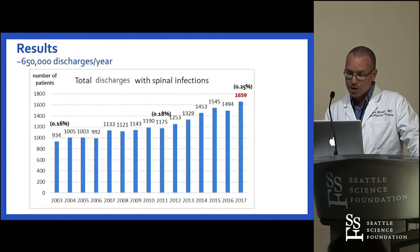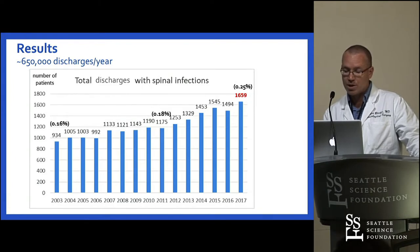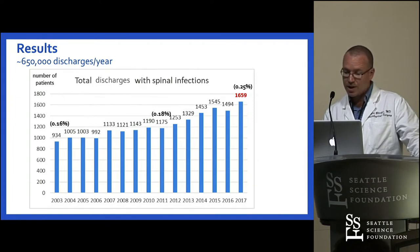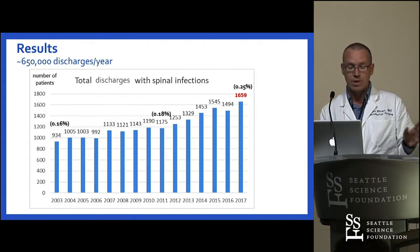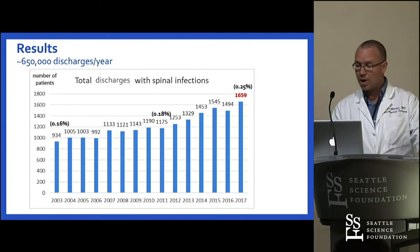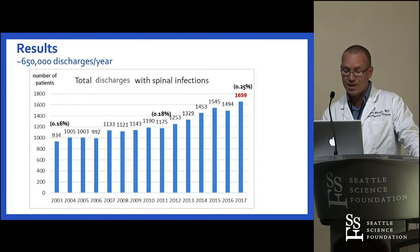And this is what we got. In the graph, you can see the absolute numbers of patients discharged each year with spine infections. While numbers were relatively stable from 2003 throughout 2011, we noticed a gradual increase of around 60 percent from that year onwards.